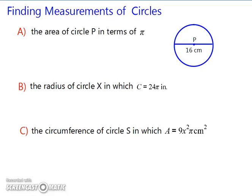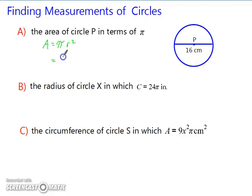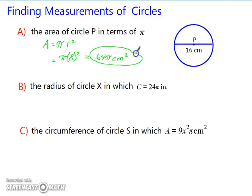Find the area of circle P in terms of pi. We know that the area of a circle is π r squared. Our diameter is 16, so our radius is 8. So we have π times 8 squared. Since the answer should be in terms of pi, the area is 64π centimeters squared.